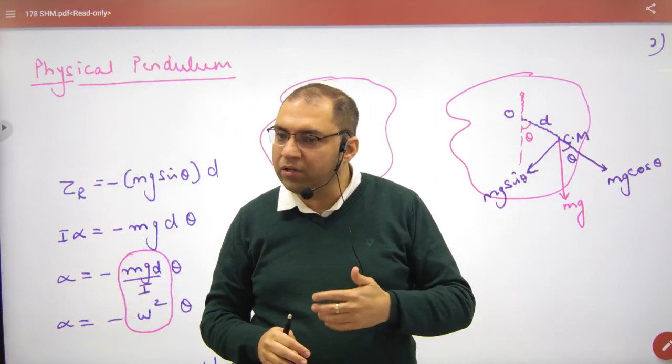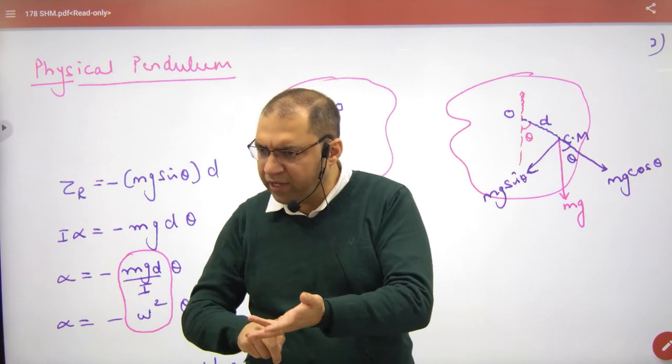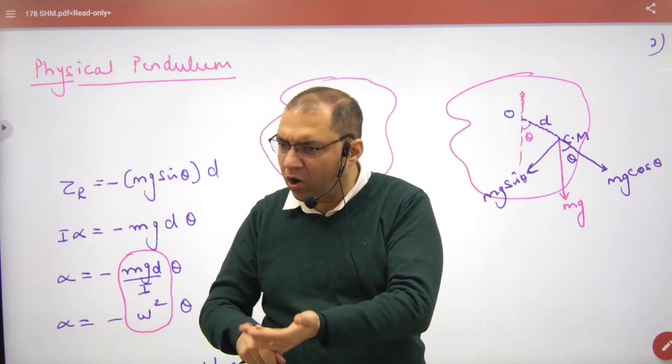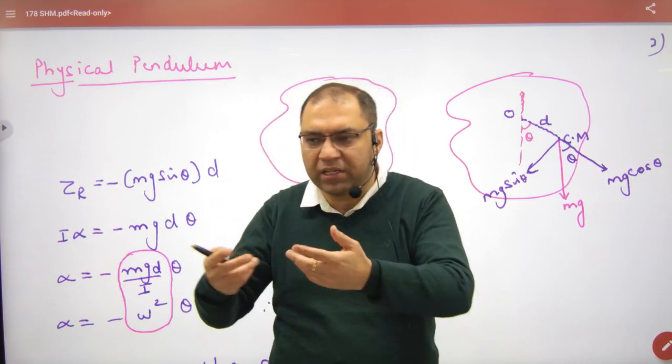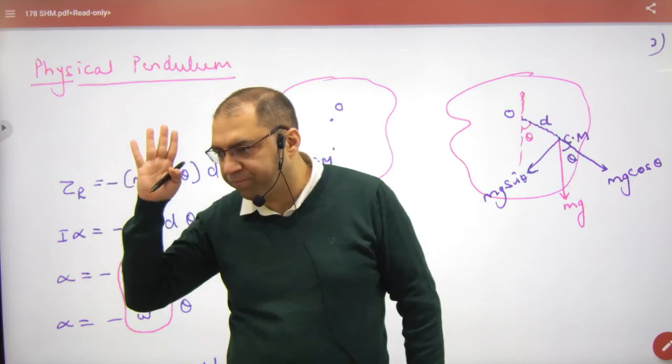So, if there is no point mass - it's a ring, a disc, a photo frame, a rod, anything, but it's not a point mass which is not mr-square - so it's a physical pendulum. Okay?